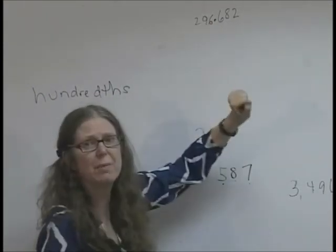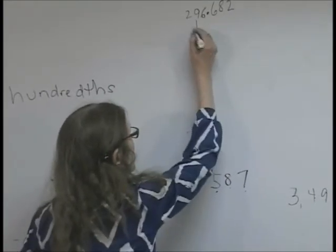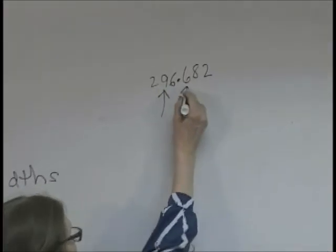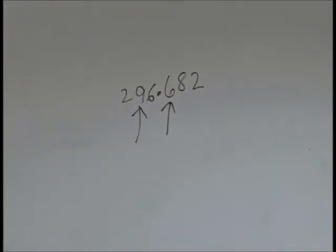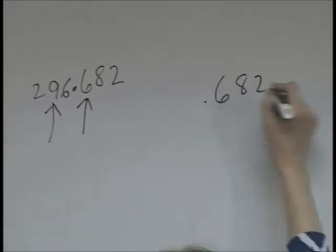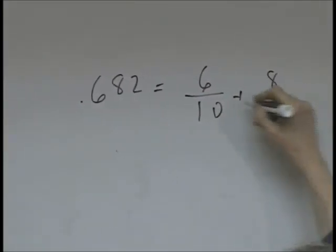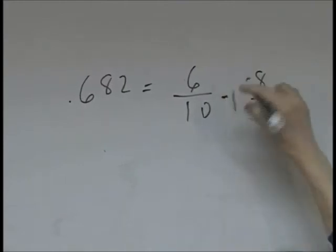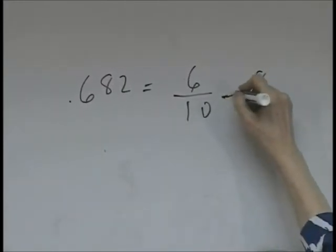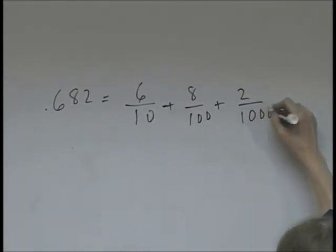This is the tens place, but this, the first place behind the decimal, is the tenths place. Okay, so let's look at this. .682 is equal to 6 tenths and 8 hundredths and 2 thousandths.